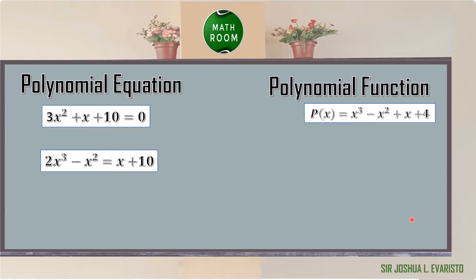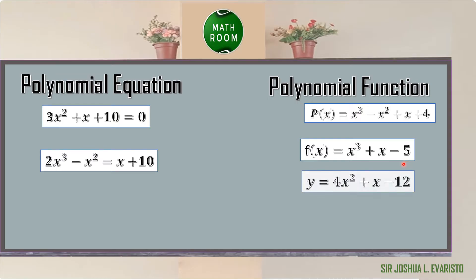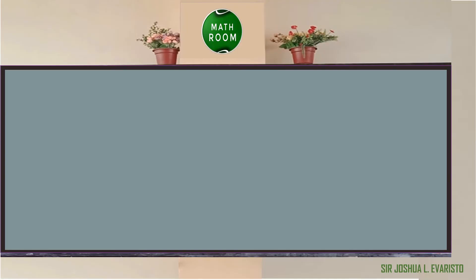Another example of a polynomial function is f(x) = x³ + x − 5. A polynomial function can also be written as y = 4x² + x − 12, since p(x) and f(x) can also be written in the form of y.